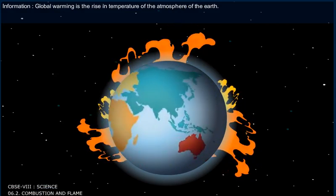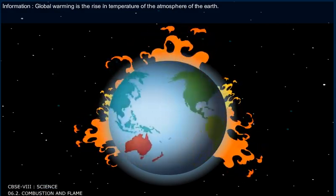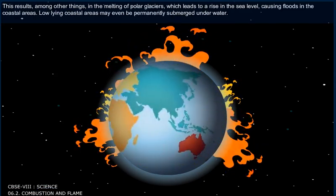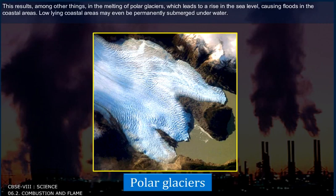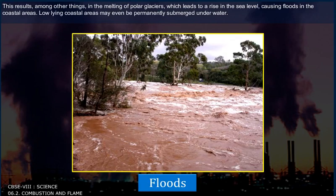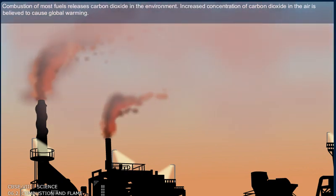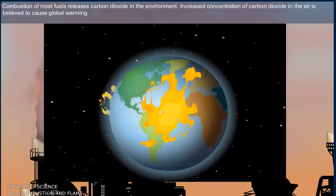Global warming is the rise in temperature of the atmosphere of the earth. This results, among other things, in the melting of polar glaciers, which leads to a rise in sea level, causing floods in coastal areas. Low-lying coastal areas may even be permanently submerged underwater. Combustion of most fuels releases carbon dioxide into the environment, and increased concentration of carbon dioxide in the air is believed to cause global warming.